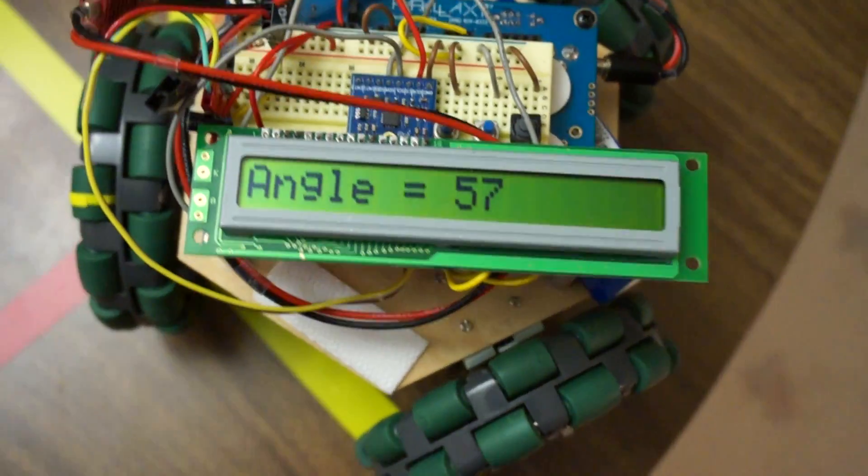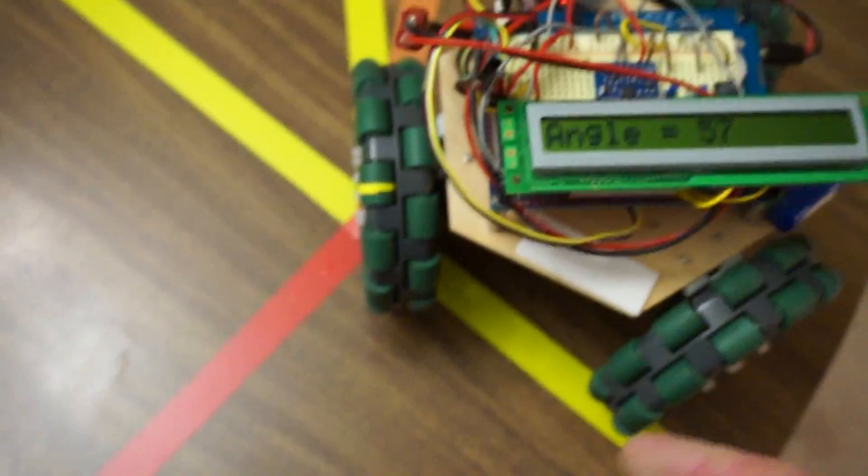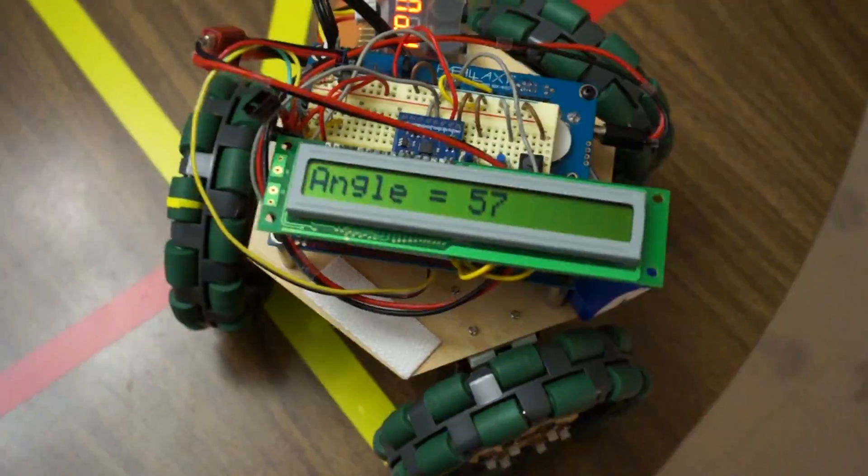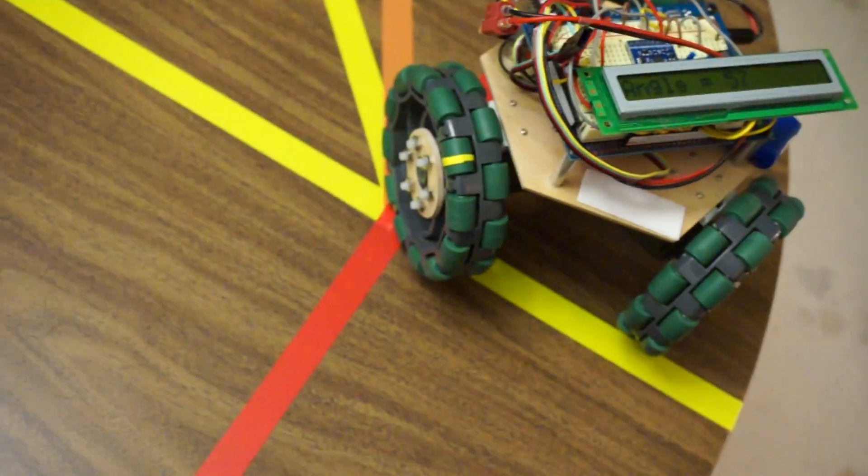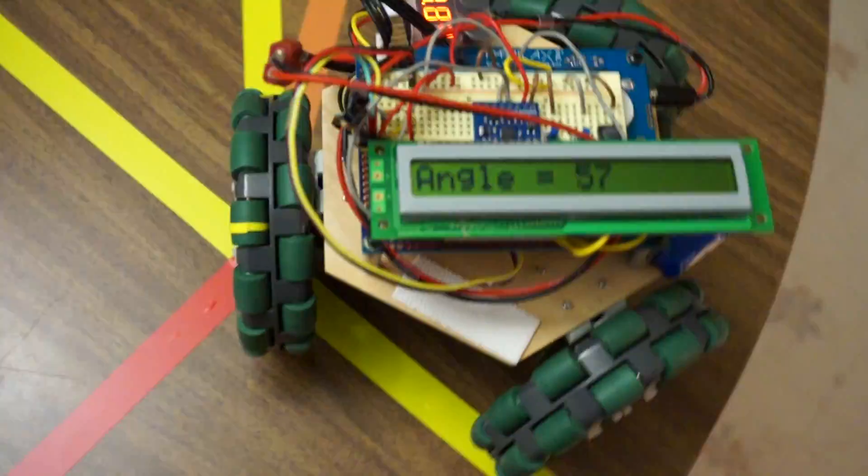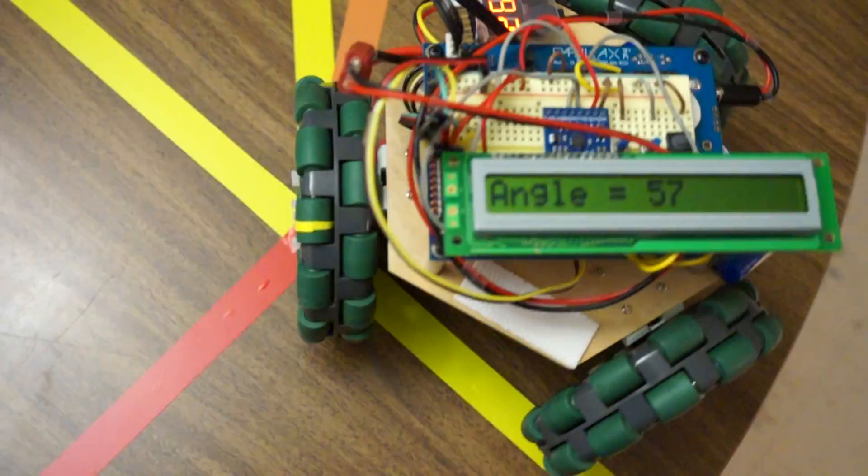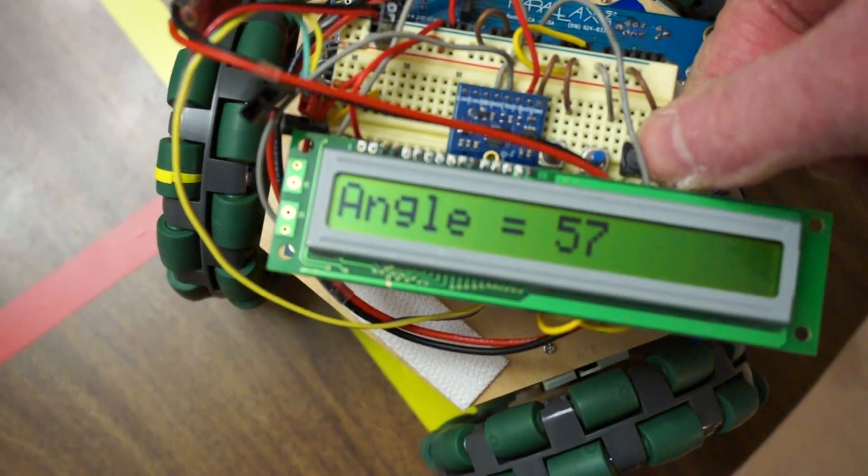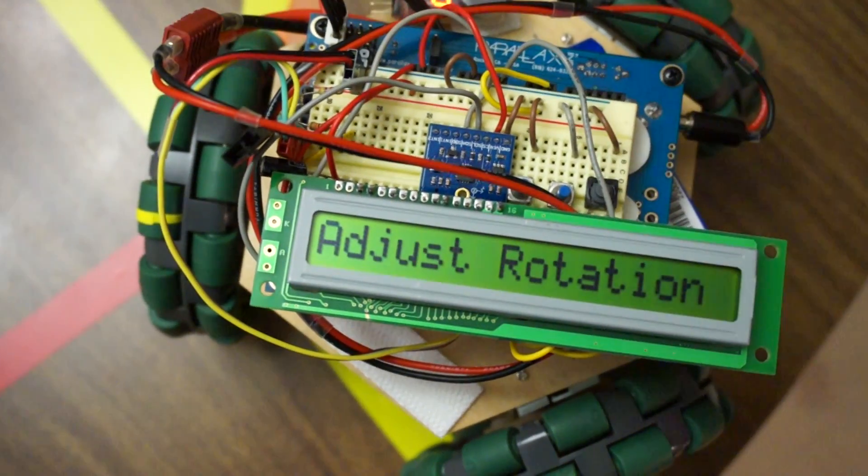And then the angle. Now theoretically it'd be 45 degrees, but I ended up having to change it to 57 degrees to overcome a couple of problems. One is the friction, and the other thing is the Dynamixel motors don't turn very well at low speeds. They don't, you can't really accurately adjust the speed at low speed, and so this is just kind of trial and error on that.